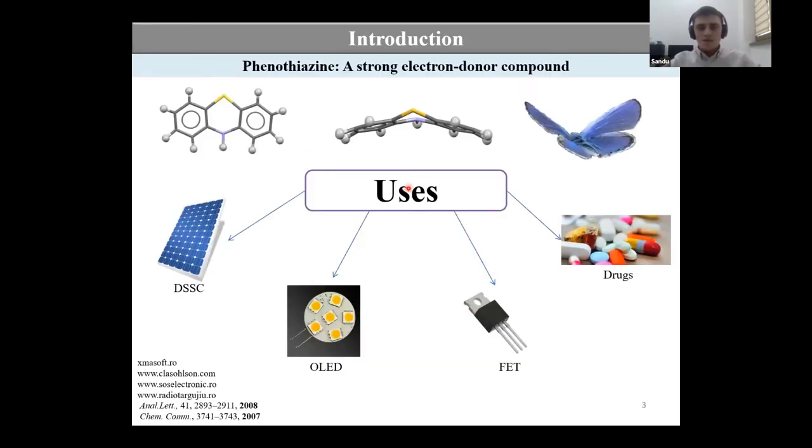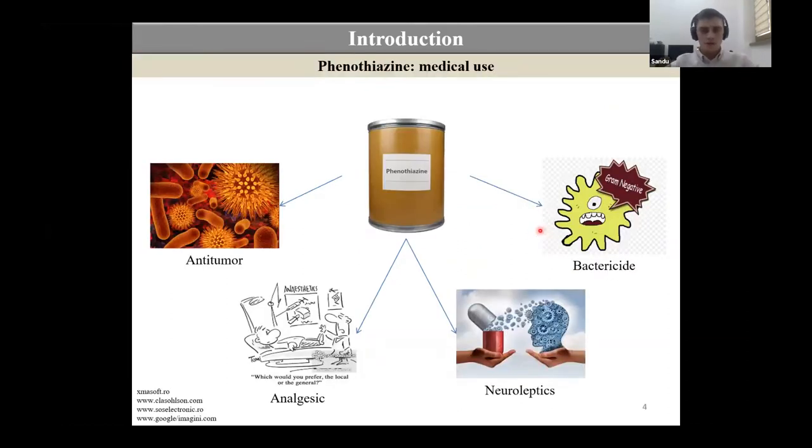Phenothiazine is a fused three-cycle system which have a band shape named butterfly geometry, and due to its electronic donating properties, this compound is used for synthesis of derivatives used in optoelectronics such as dye sensitized solar cells, organic light emitting diodes, field effect transistors, and also to obtain derivatives for drug formulations. Due to its versatile properties, the phenothiazine presented good activities as antitumor agents, analgesics, neuroleptics, and bactericides.